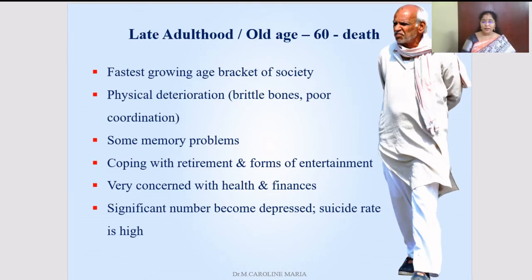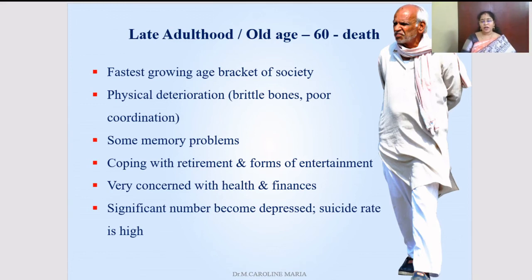Late adulthood or old age, 65 up to death — this is the fastest-growing age group in society. Physical deterioration occurs: brittle bones, poor eye-hand coordination, and memory problems. They struggle to cope with retirement because they want to stay engaged but may not know how. They are very concerned with their health and finances. A significant number of people become highly depressed, and the suicidal rate is also high at this age because of losing their life partner.